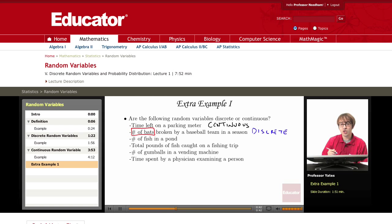Number of fish in a pond. Again, the key phrase there is number of fish. It could be zero, one, two, it could be in the thousands. That will be a discrete random variable.